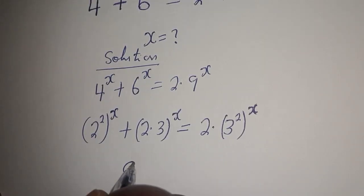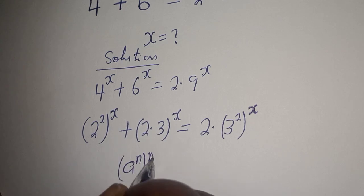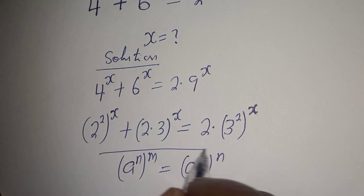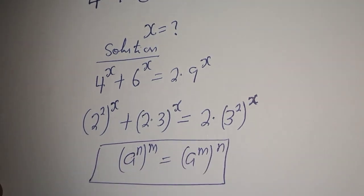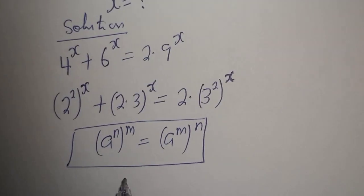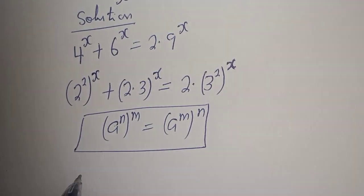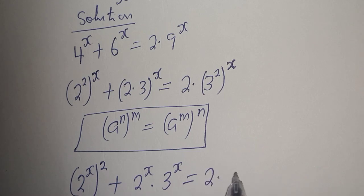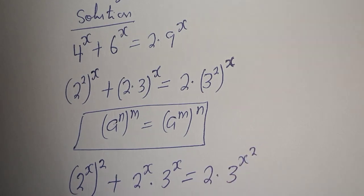Then, if you have a raised to power n, to the power of m, this is equal to a raised to power m multiplied by n. This can be written as 2 raised to power 2s plus 2 raised to power s multiplied by 3 raised to power s is equal to 2 multiplied by 3 raised to power 2s.